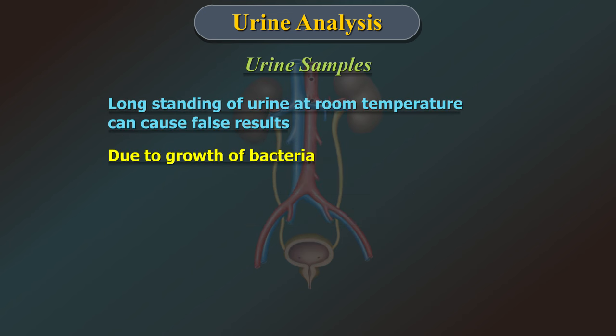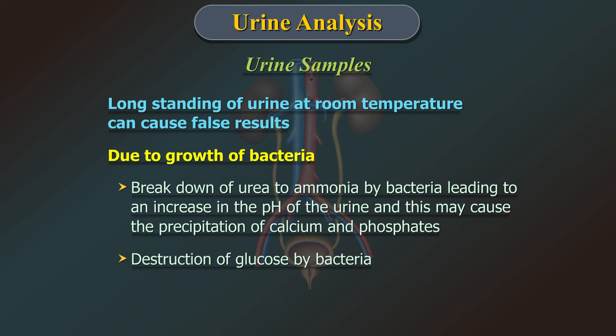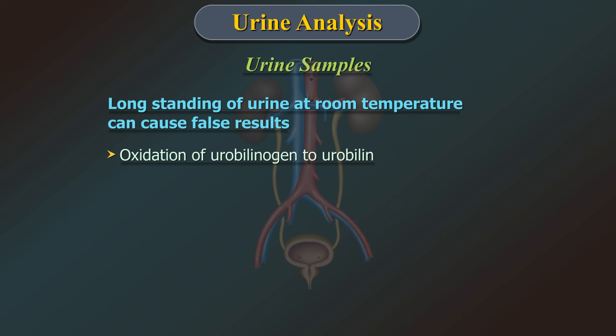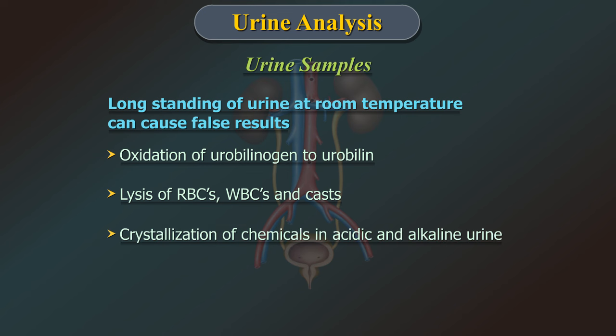Long-standing of urine sample at room temperature can cause false results due to growth of bacteria, breakdown of urea to ammonia by bacteria leading to an increase in pH of the urine, precipitation of calcium and phosphates, oxidation of urobilinogen to urobilin, destruction of glucose by bacteria, lysis of red blood cells, white blood cells and casts, and crystallization of chemicals in acidic and alkaline urine.